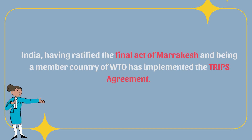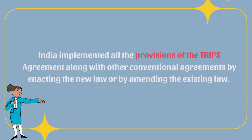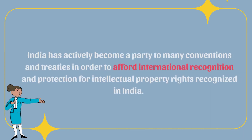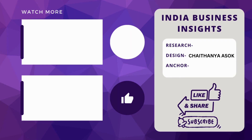Conclusion: India, having ratified the Final Act of Marrakesh and being a member country of the WTO, has implemented the TRIPS Agreement. India implemented all the provisions of the TRIPS Agreement along with other conventional agreements by enacting new laws or amending existing laws. In India, there are different forms of intellectual property rights allowing a person to obtain protection for their assets. India has actively become a party to many conventions and treaties in order to afford international recognition and protection for intellectual property rights recognized in India.